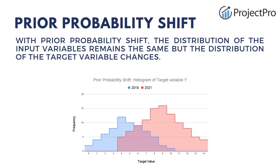The second type of shift is prior probability shift. This shift happens when the distribution of the target variable changes, but the distribution of the independent variable remains the same and the relationship between variable x and y is also the same. For example, take a model trained on data of persons who repay loans on time. But if there is a change in customer behavior and they don't repay their loan on time, then we can say there is a change in the target variable, so there is a prior probability shift.